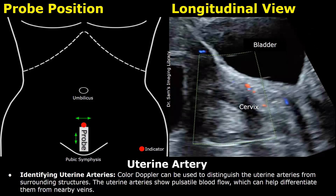When color Doppler is applied, you will find the pulsatile flow, which will basically be an alternating color between different shades of red and also some shades of blue. This will indicate a pulsatile flow. This feature will help in distinguishing the uterine arteries from nearby veins.